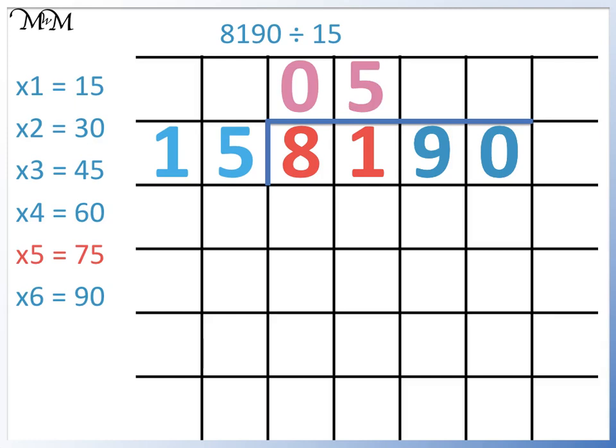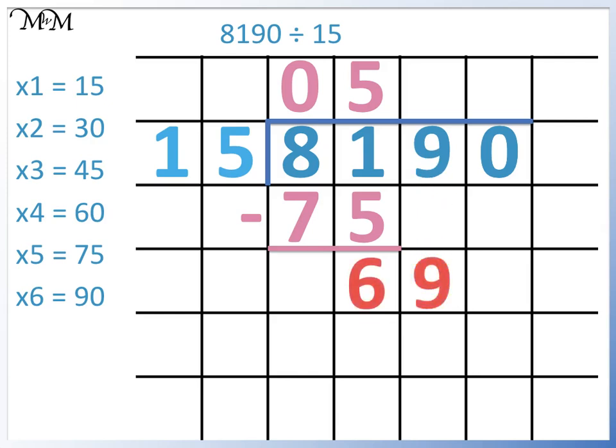5 times 15 is 75. To find the remainder, we subtract 75 from 81. This gives us a remainder of 6. Now we bring down the next digit.